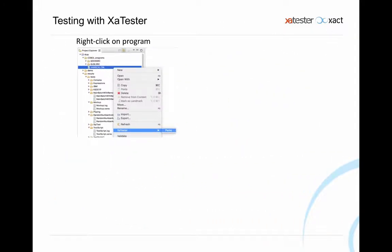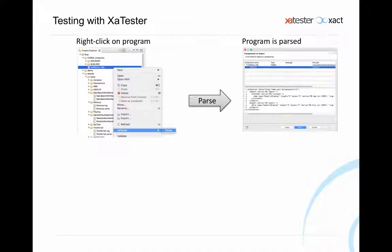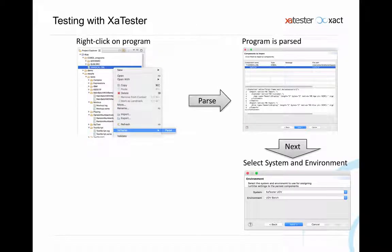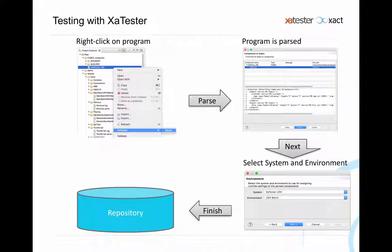You can add a component to the repository from the browser or from Eclipse. In Eclipse, you right-click on the source code, choose XA Tester Parse, and a wizard opens showing the data structure from the linkage section. You click Next, select the environment and system for the component, click Finish, and it's in the repository. This is also available in the browser, and you can even set up automatic compile scripts to add components to the repository.